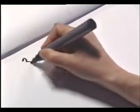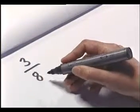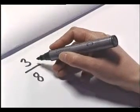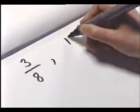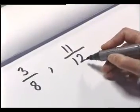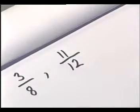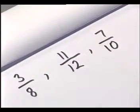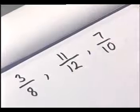Let's have a look at some other fractions. Let's say we have three eighths — we've divided a whole up into eight pieces of equal size and taken three of them. We could have eleven twelfths — we've divided a whole up into twelve pieces and taken eleven of them. We could have seven tenths — we've divided a whole into ten pieces of equal size and taken seven of them.